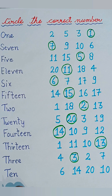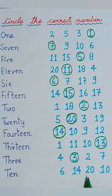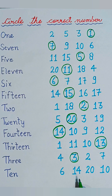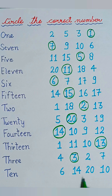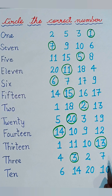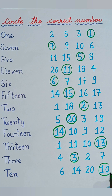See the last one: T-E-N, ten. See: six, fourteen, twenty, and ten. So we have to circle the correct number ten. Ten is given at the last, so we will circle the number ten.